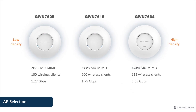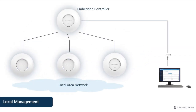Selecting the GWN model to deploy depends on the capacity and speed requirements of the location. To locally manage GWN access points, all enterprise Grandstream access points come with an embedded controller that provides centralized management of up to 50 GWN access points. You simply designate one access point as the controller by logging into its web interface. The integrated controller is free and built into the access point, so there are no licensing fees.